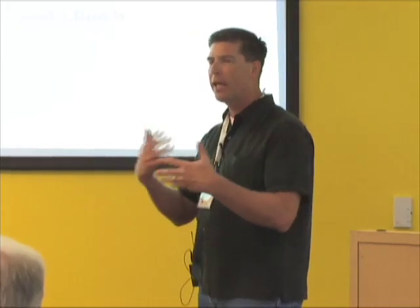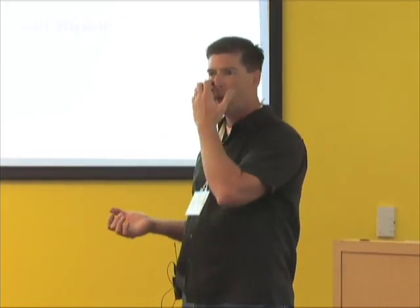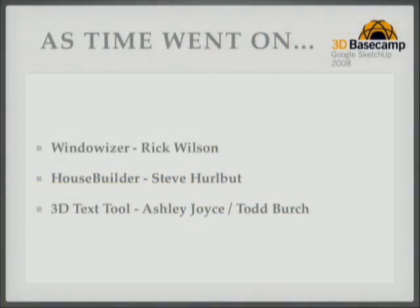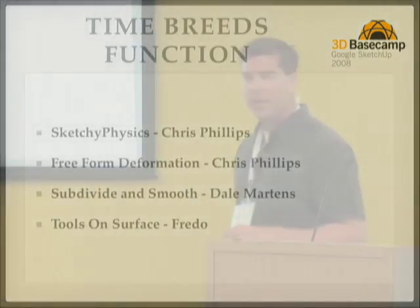As Ruby scripting progressed, scripts got more advanced. Rick Wilson — who's right here — is going to talk about WindowWiser shortly. That's an awesome script. Then House Builder: this is the first script that blew me away. And then the 3D text tool came out, which is now built into version 6. Today we have things like Sketchy Physics by Chris Phillips, Freeform Deformation, Subdivide and Smooth, and Tools on Surface — brand new.